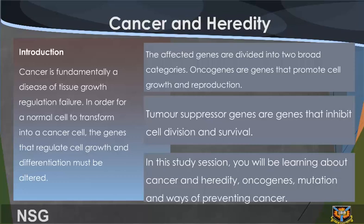Oncogenes are genes that promote cell growth and reproduction. Tumor suppressor genes are genes that inhibit cell proliferation and survival. In this study session, you will be learning about cancer and heredity, oncogenes, mutation, and ways of preventing cancer.